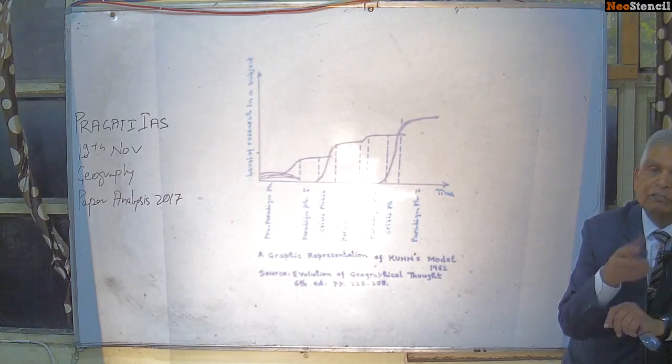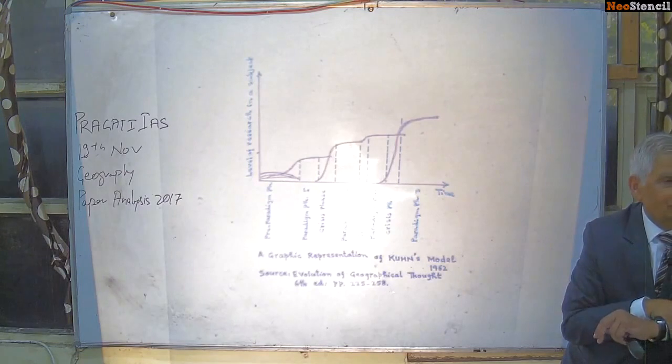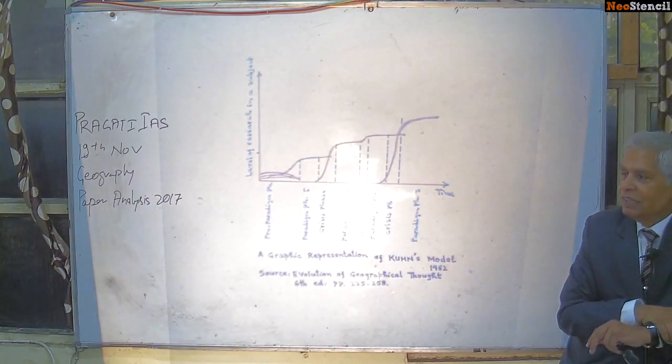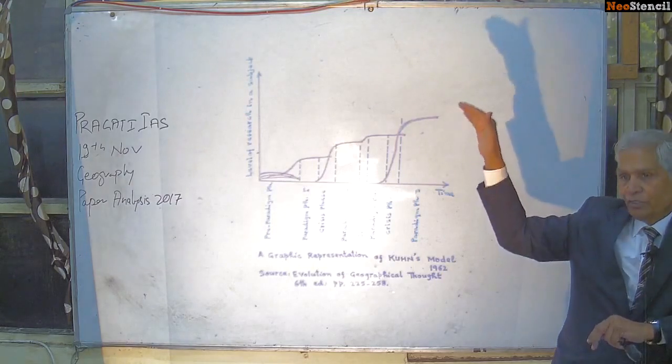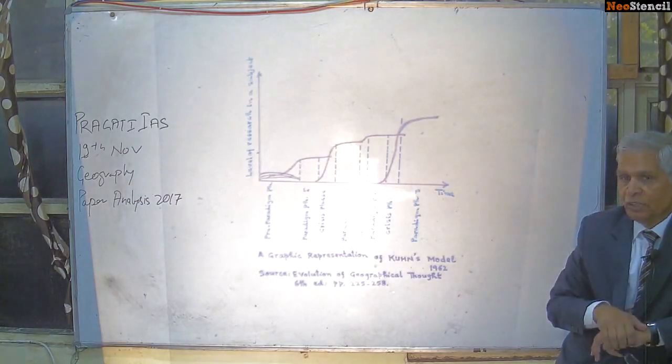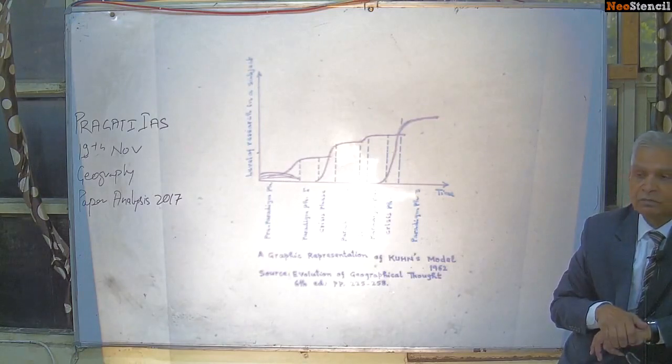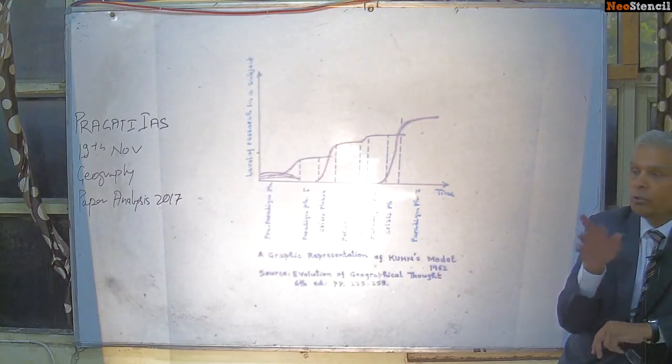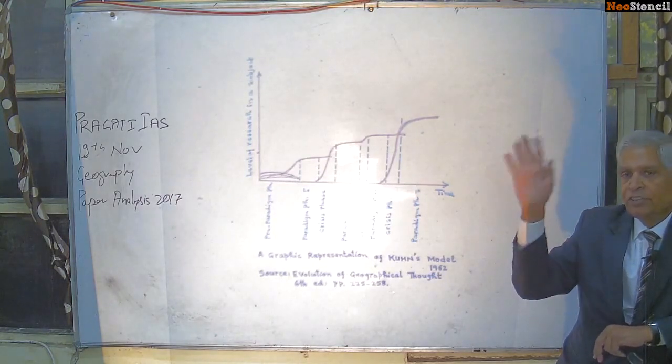He developed a theory of theories or model of models and said that growth of knowledge is not a continuous process. It follows through two phases: peaceful phase and the crisis phase.